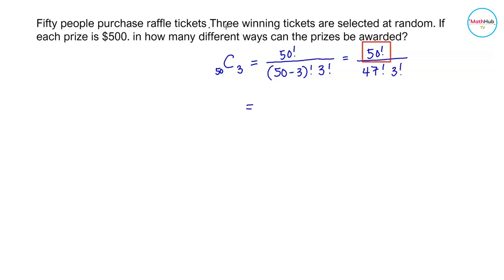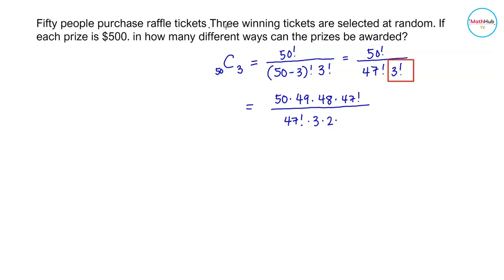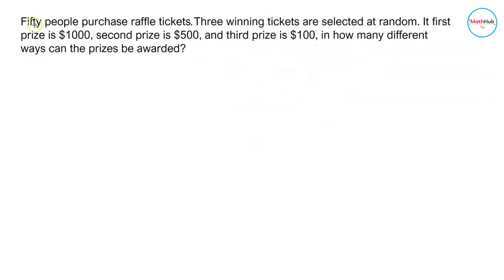We rewrite 50! as 50 × 49 × 48 × 47!, cancel 47!, then divide by 3 × 2 × 1. Multiplying 50 × 49 × 48 and dividing by 6 gives us 19,600 ways.